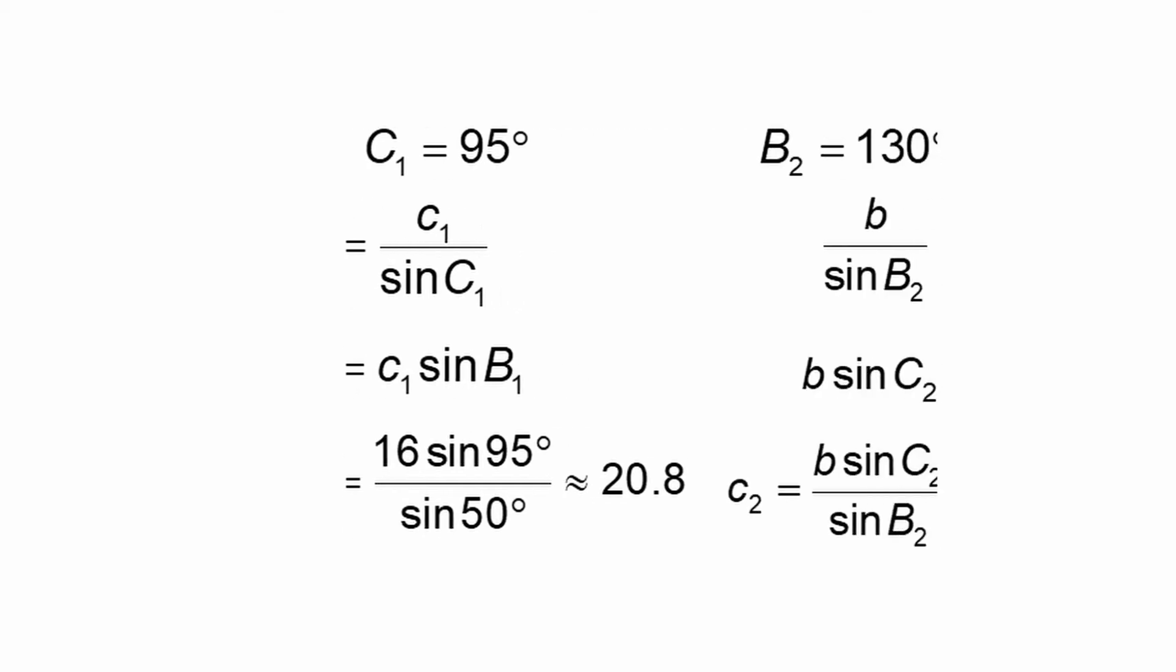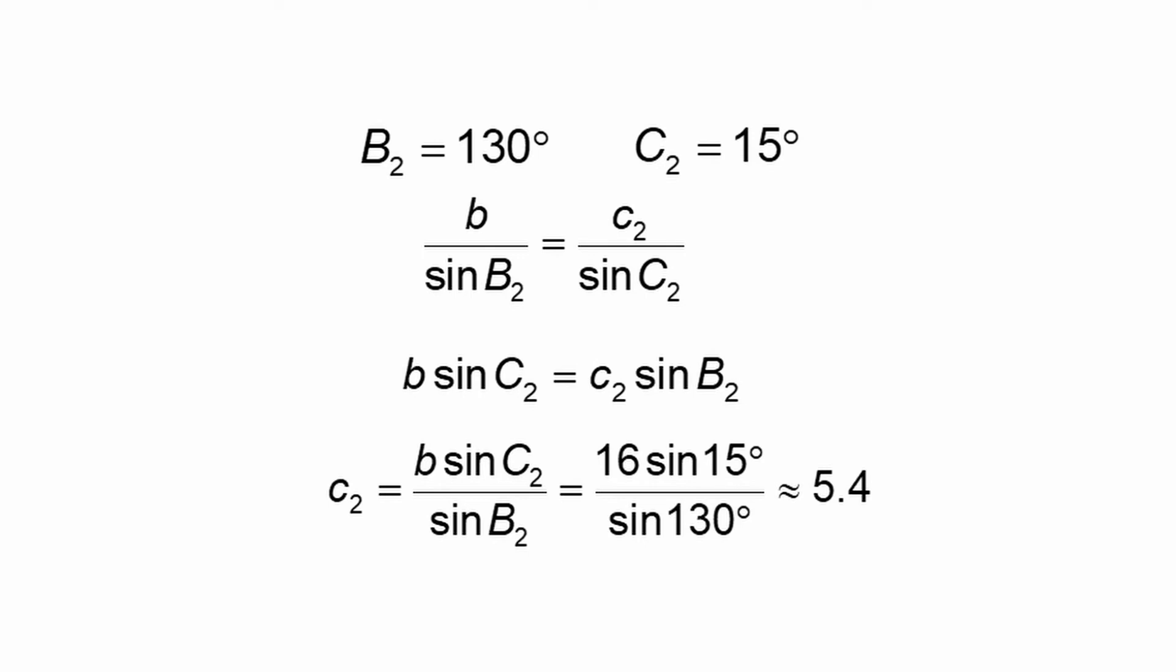And alternatively, if we take B equals 130 degrees and C equals 15 degrees, we would get that C is still equal to B times sine of C over sine of B. But there, that takes the form 16 times sine of 15 degrees over sine of 130 degrees, or approximately 5.4 unitless measurements.